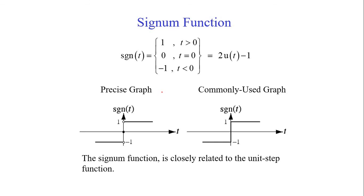The signum function looks similar to the unit step signal but differs in its negative side. For t > 0, the value is 1; for t = 0, it is 0; and for t < 0, the amplitude is −1 over the entire negative range. There is a sudden discontinuity at t = 0, after which over the entire positive range the amplitude is 1.